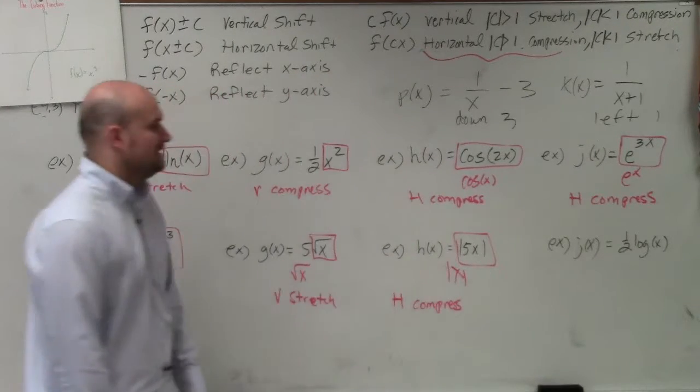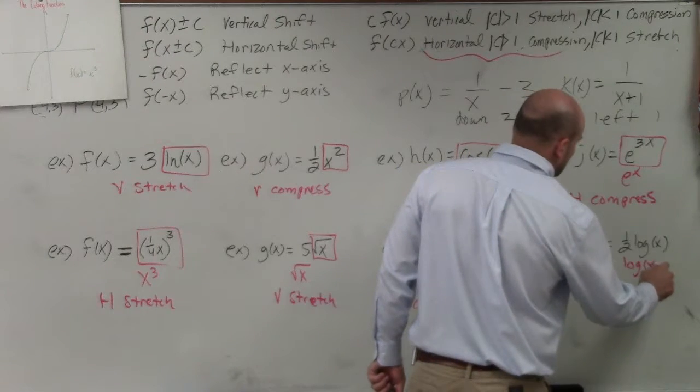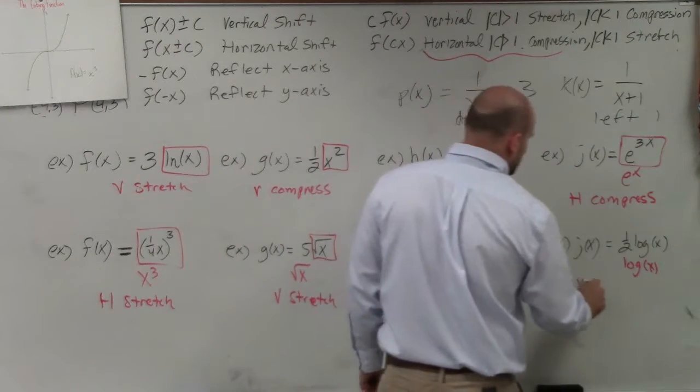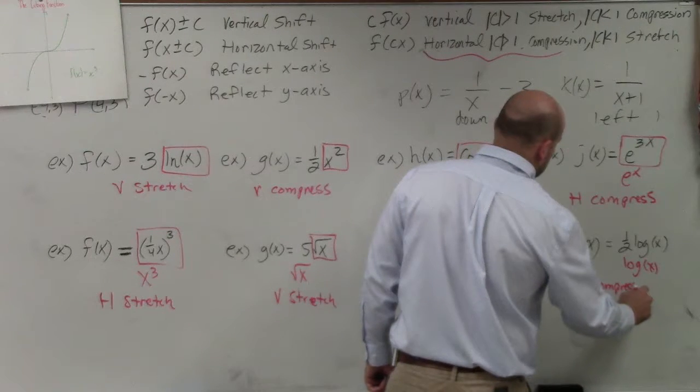And then, last but not least, my log of x is the pure. So I'm just multiplying by one half, so that's a vertical compression based on my rules.